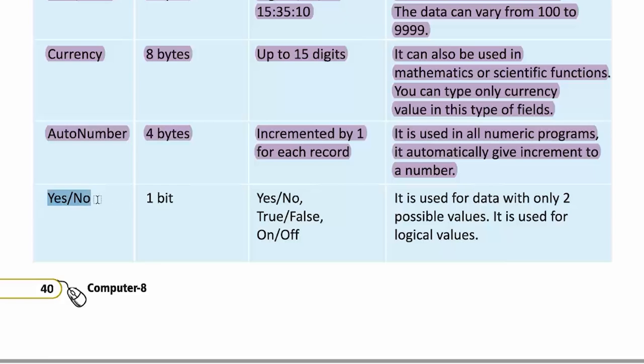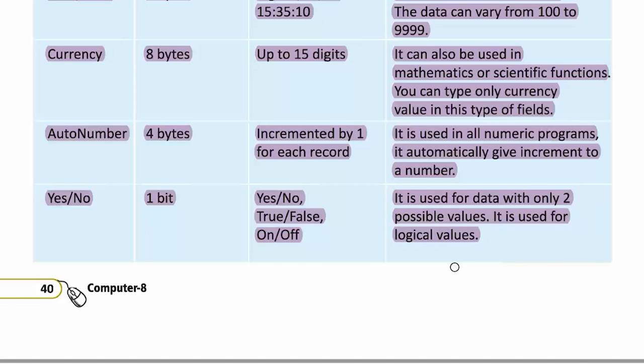Next: yes/no. Size: 1 byte. Format: yes or no, true or false, on and off. Function: it is used for data with only two possible values; it is used for logical values.